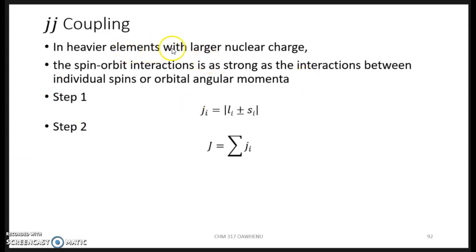It is common with heavier elements, those with a larger nuclear charge, so talking about atomic number 40 and above. In JJ coupling, the spin-orbit interaction is as strong or even stronger than the interaction between the individual spins or orbital angular momenta.